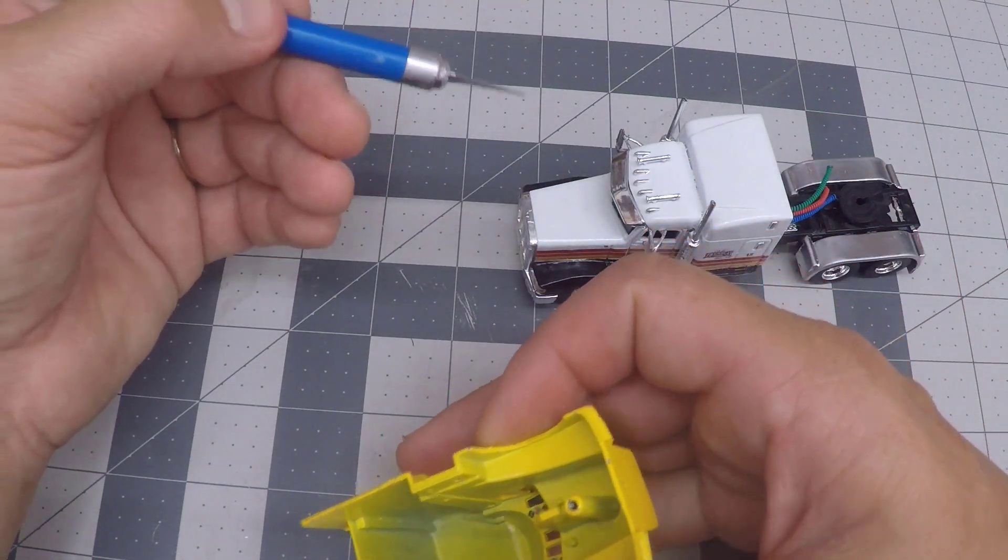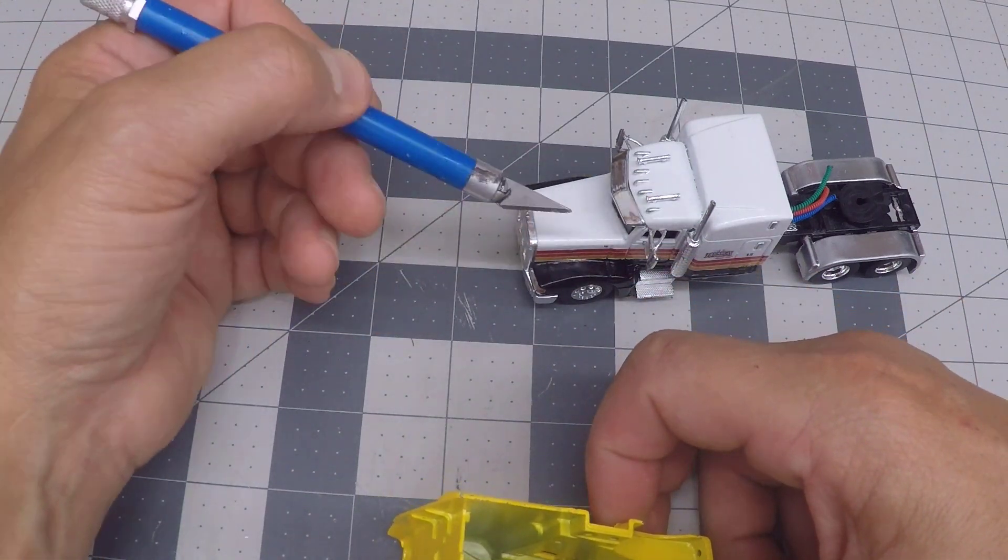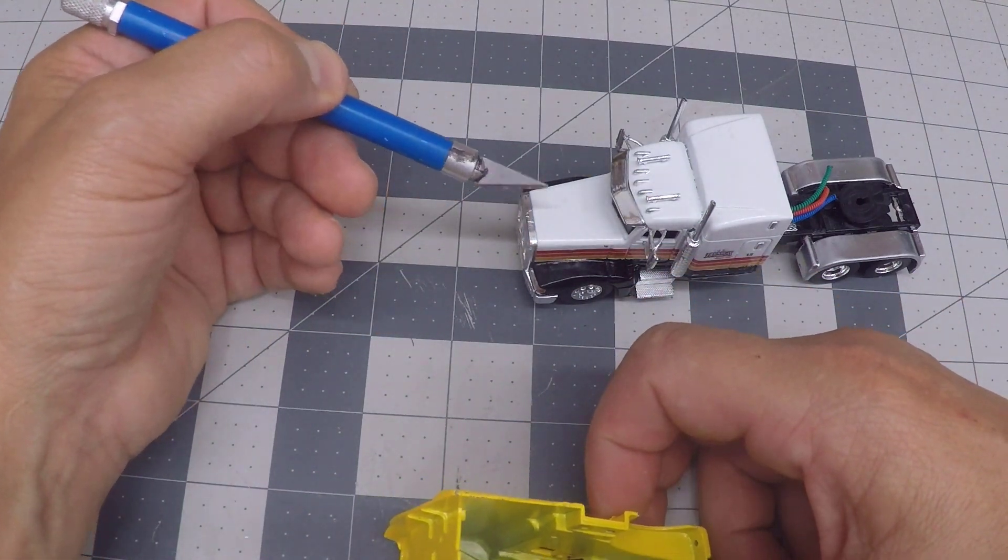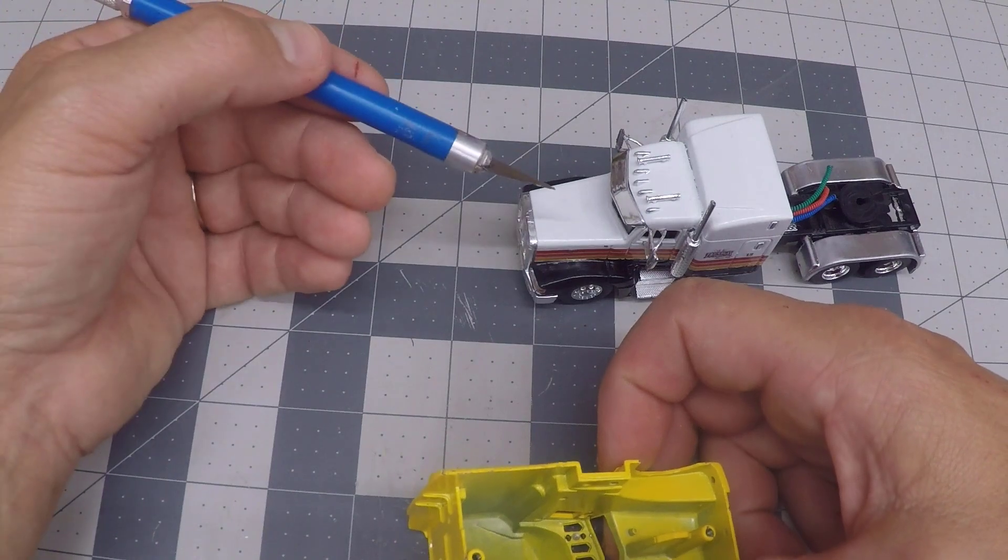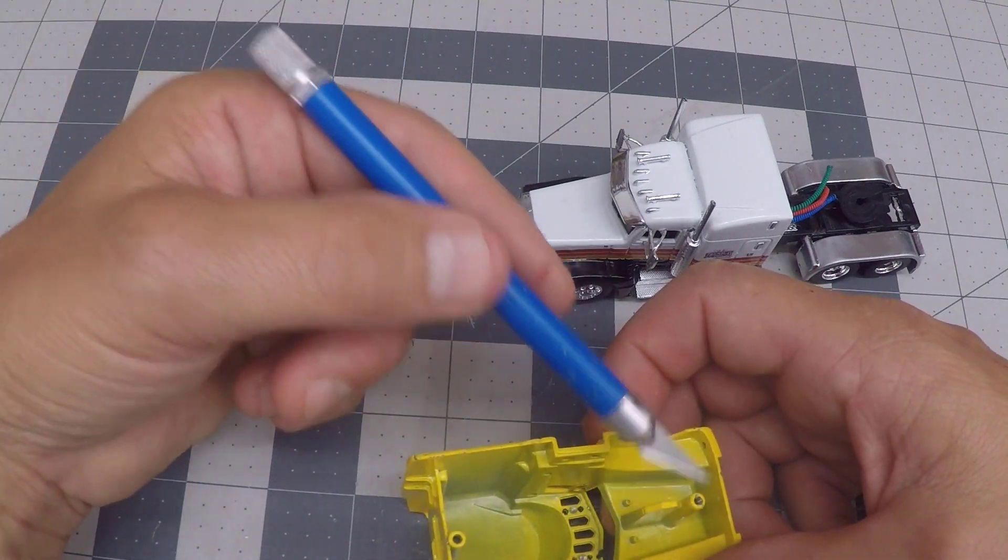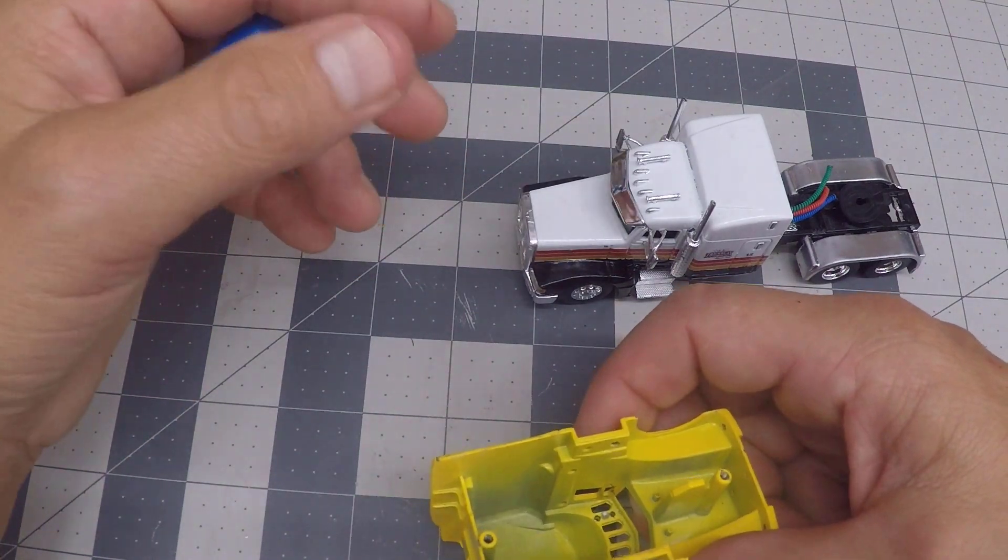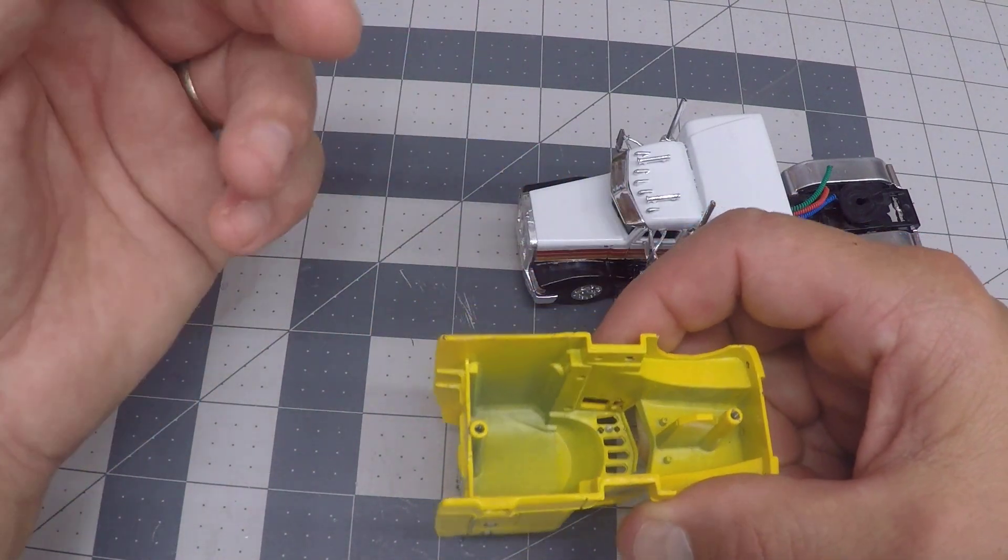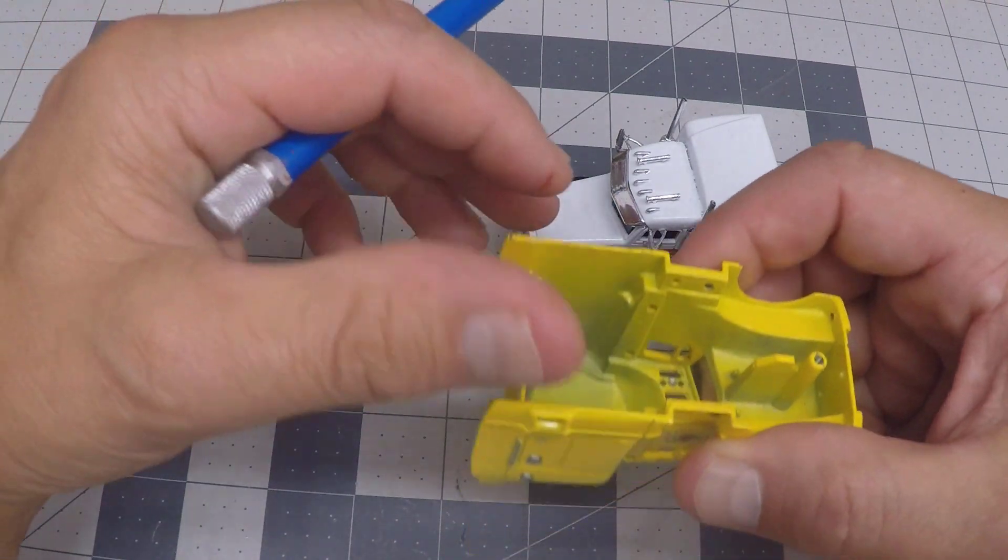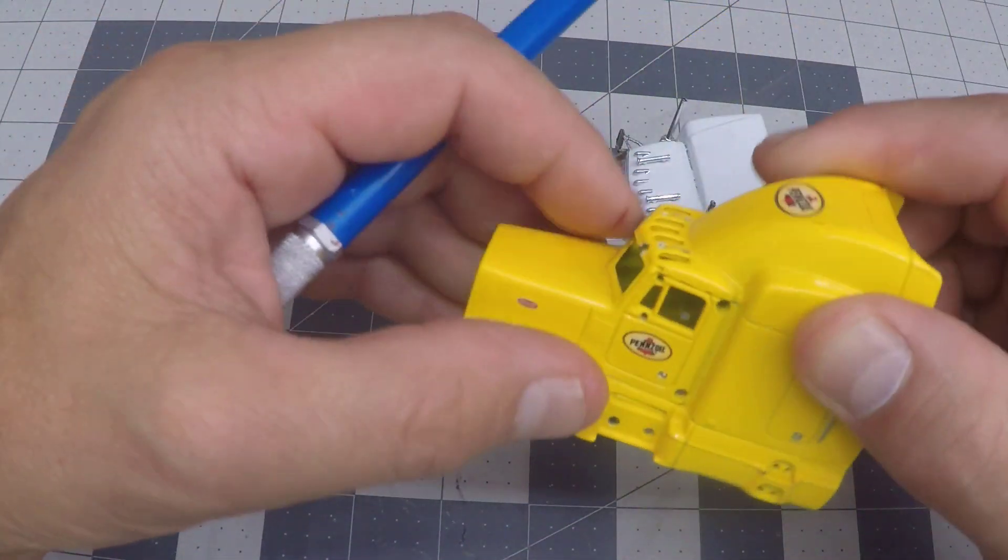It would be different for every builder because if you're not using a die cast promotions Peterbilt frame, maybe you use a different frame or you reuse the original frame, which you could do. That's a possibility. They're all going to sit differently. So I can't tell you exactly how much to take out, but you will have to if you use die cast promotions frame.